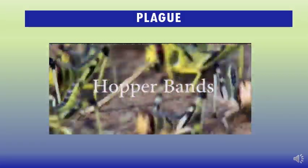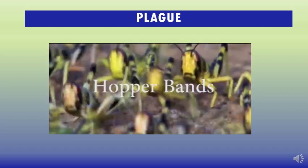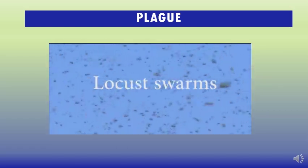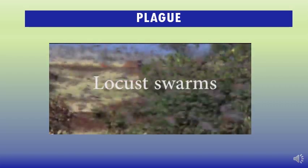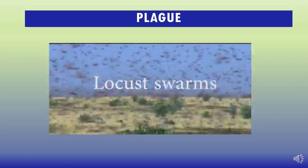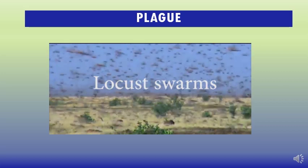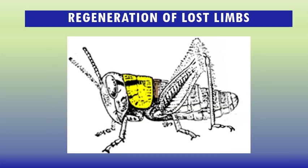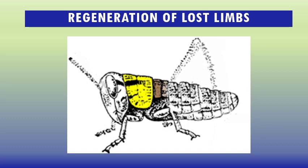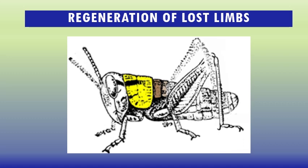Orthoptera, or at least the grasshoppers and locusts, are often considered synonymous with plagues due to the devastating damage they inflict during periods of abundance, causing swarms. Insects with gradual metamorphosis have the ability to regenerate lost limbs. If a grasshopper loses an antenna or a leg as a young nymph, the missing appendage is regrown in part at the next molt.